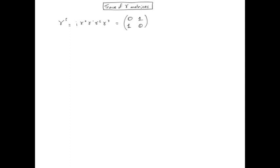Notice that there is no gamma-4 matrix. In the Dirac representation of the gamma matrices, you can show that gamma-5, defined as i times gamma-0 gamma-1 gamma-2 gamma-3, is equal to this 4x4 matrix, where each individual component, 0 and 1, are the usual 2x2 matrices.